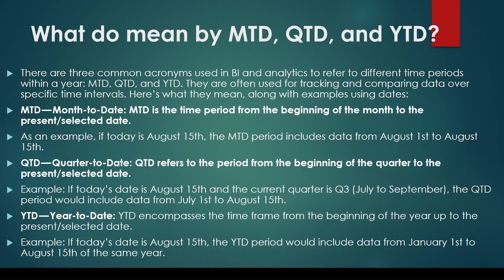You might be asked the question, what do you mean by MTD, QTD, and YTD. MTD stands for month till date, signifying the duration from the beginning of the month up to a given date or today. For example, if it's August 15th, MTD covers the period from August 1st to August 15th.